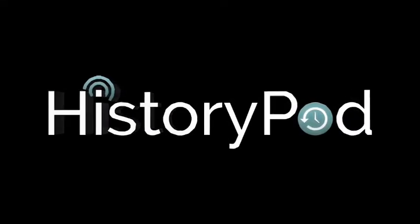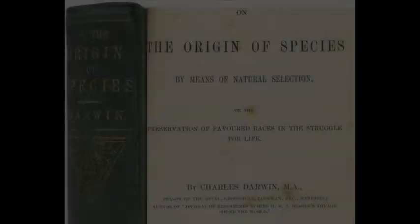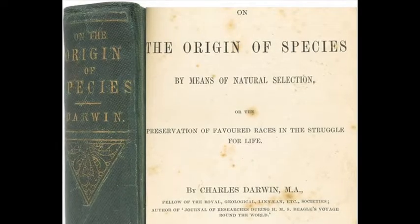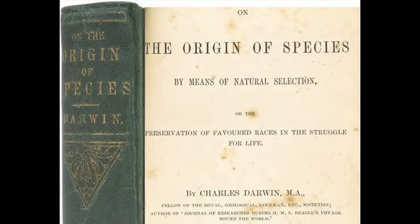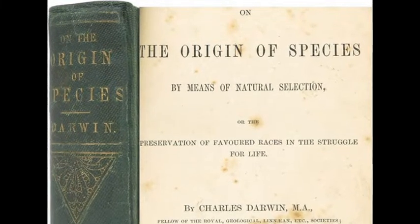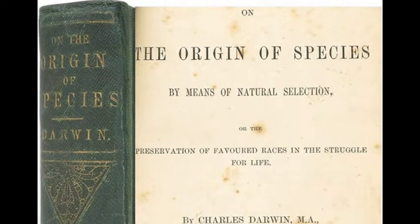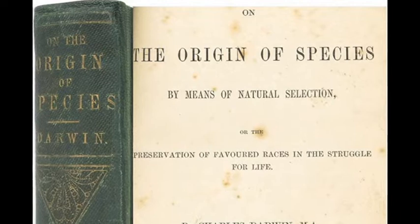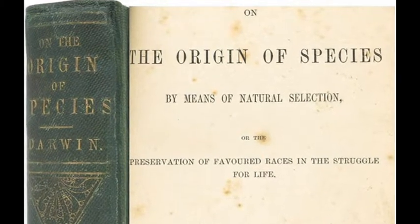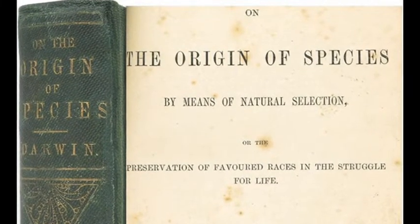Hello and welcome to HistoryPod. On 24 November 1859, English naturalist and geologist Charles Darwin published On the Origin of Species, the book that is considered by many to be the foundation of evolutionary biology.